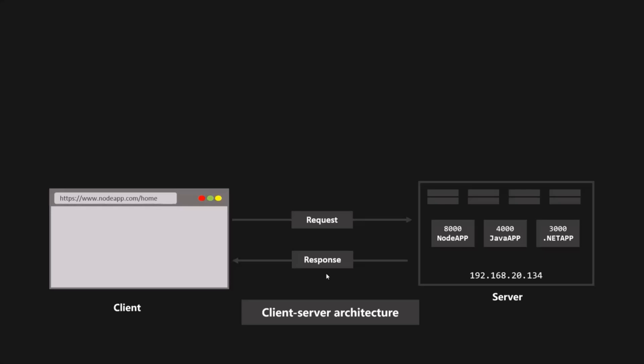This process is called the request-response model or the client-server architecture, and most of backend development revolves around this fundamental concept. While it looks like a simple process of sending a request and receiving a response, it's actually not as simple as it looks. The question is: when we type a domain name, how does the client know which server to send the request to and which port number to access?